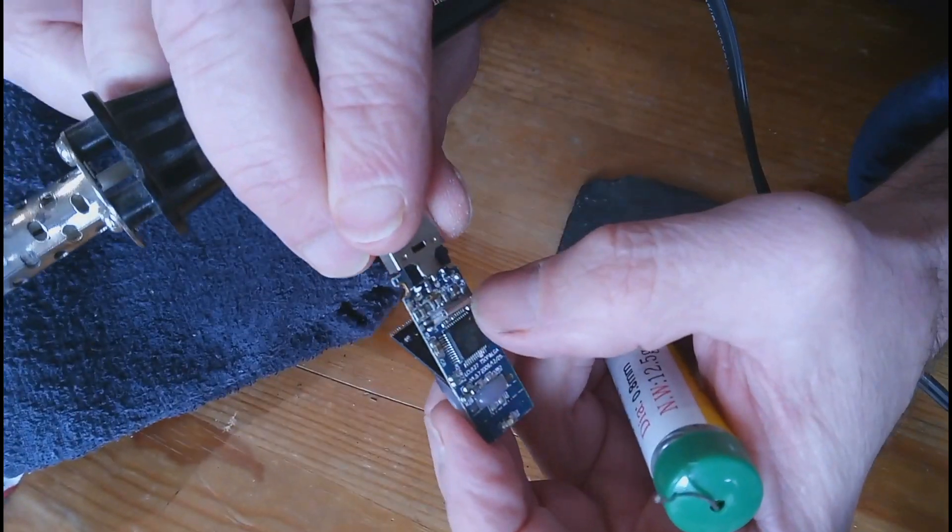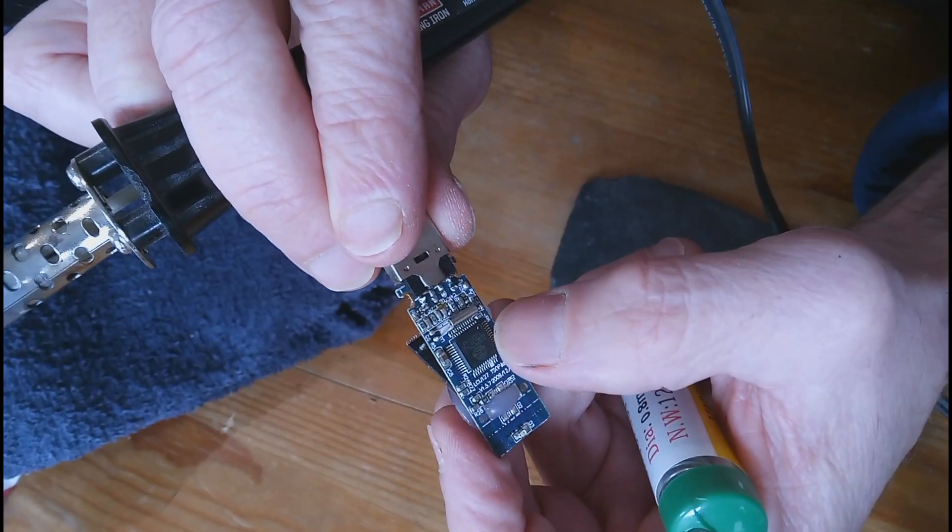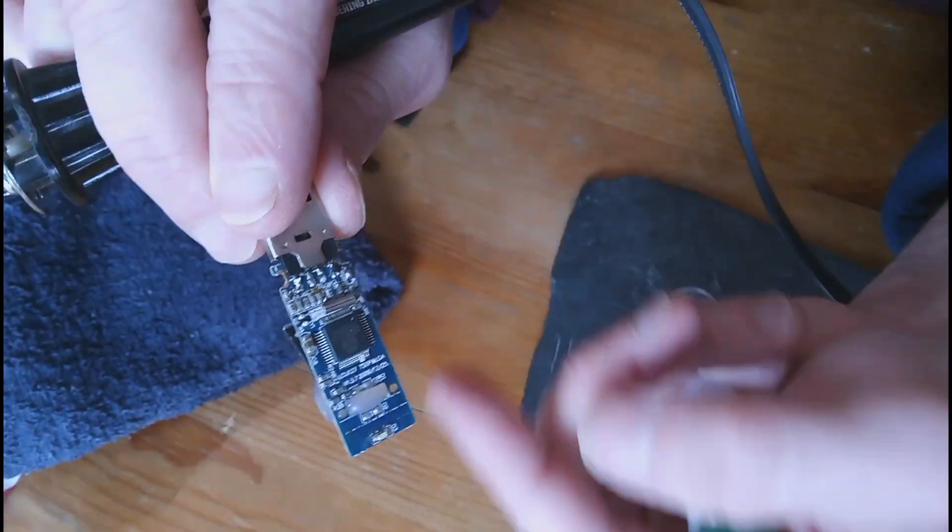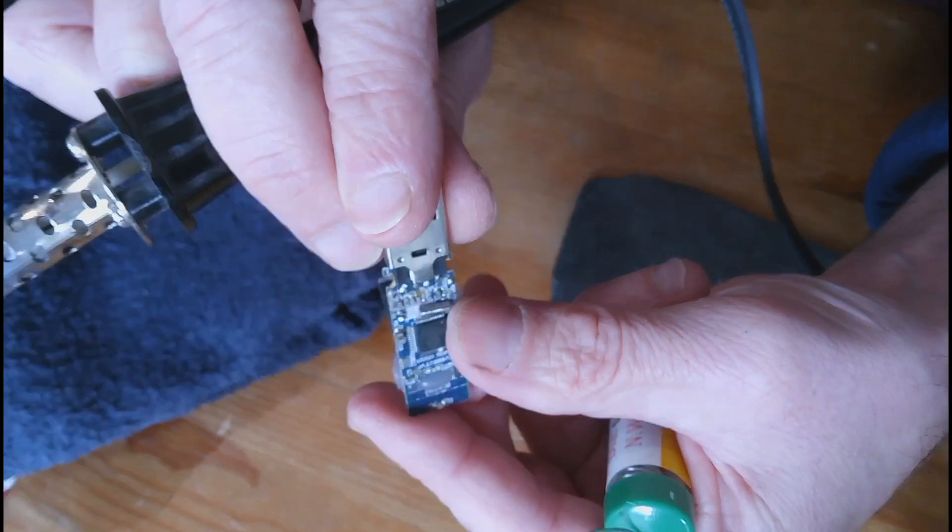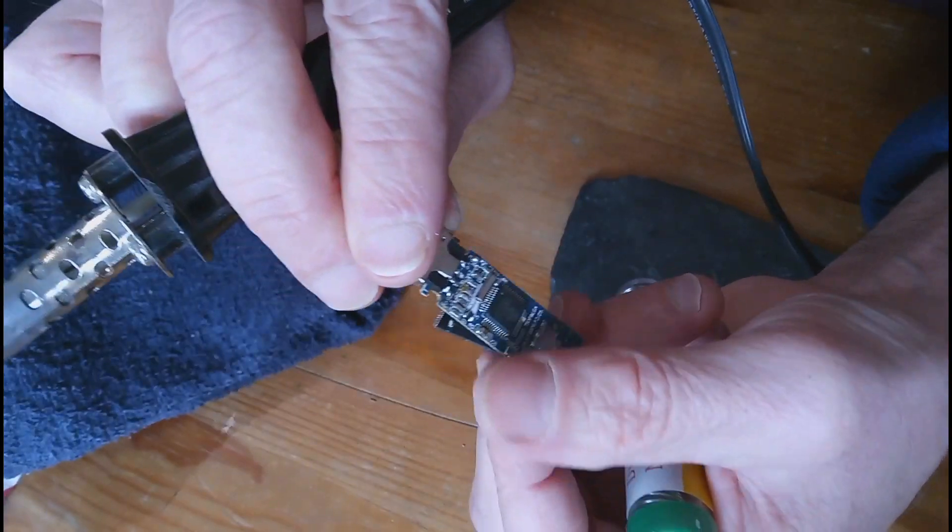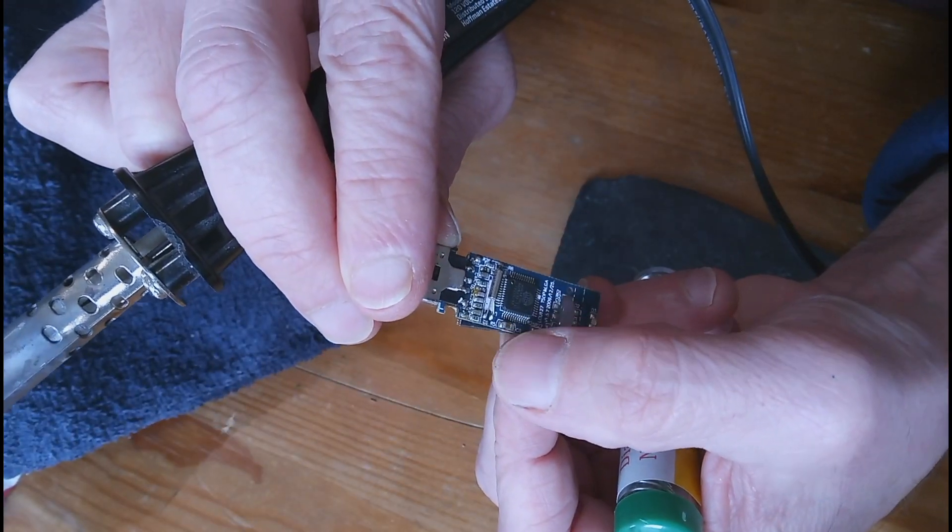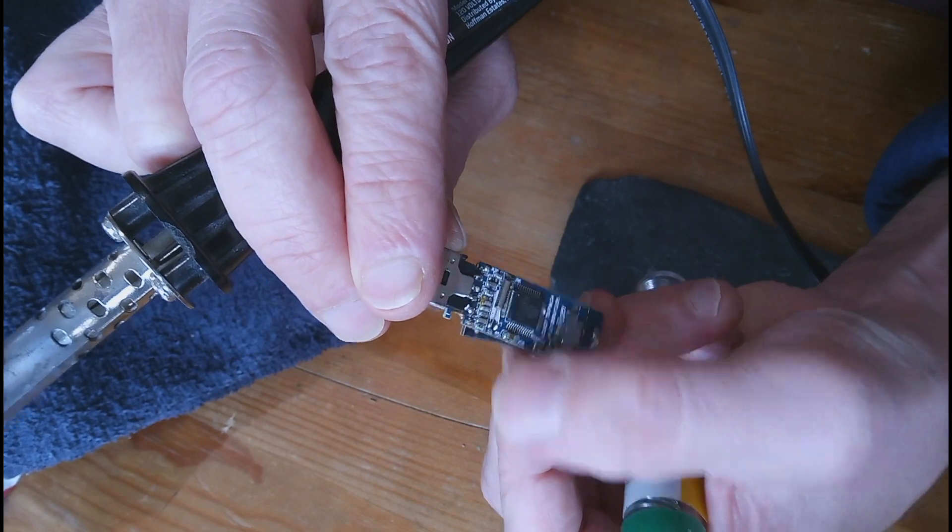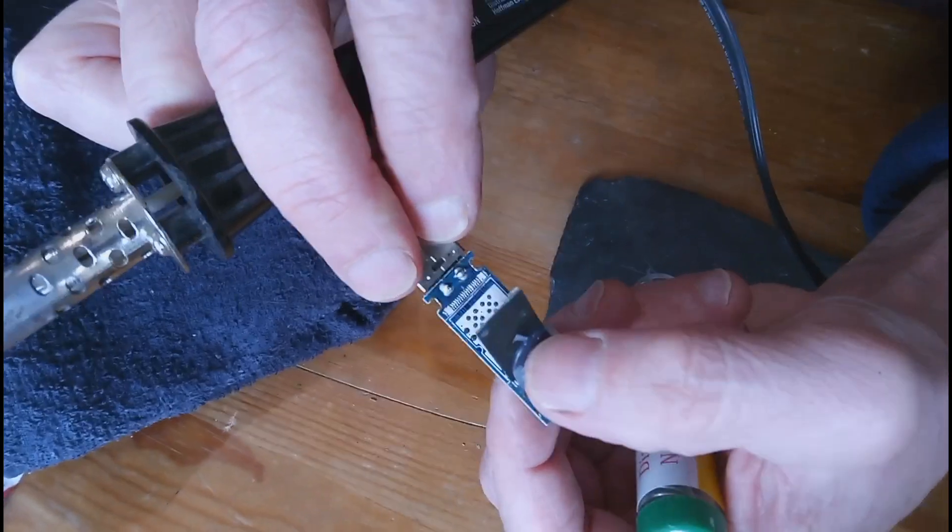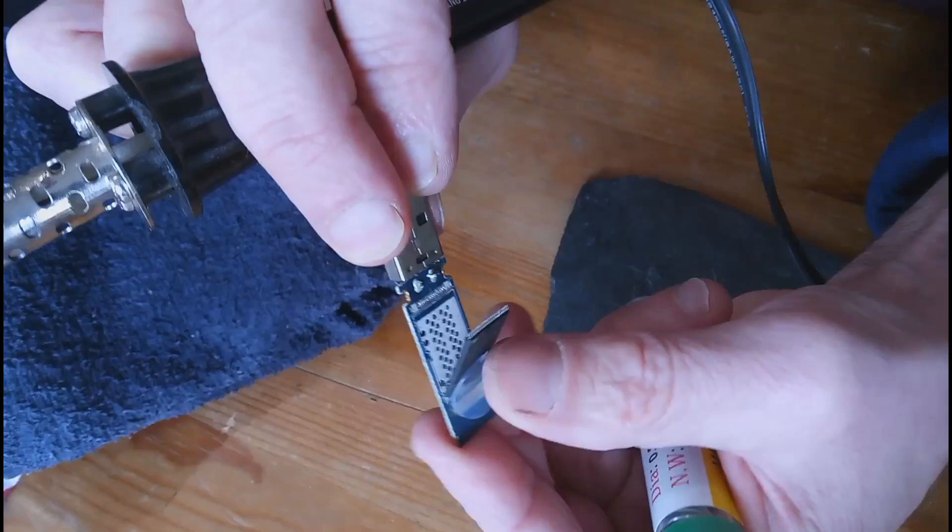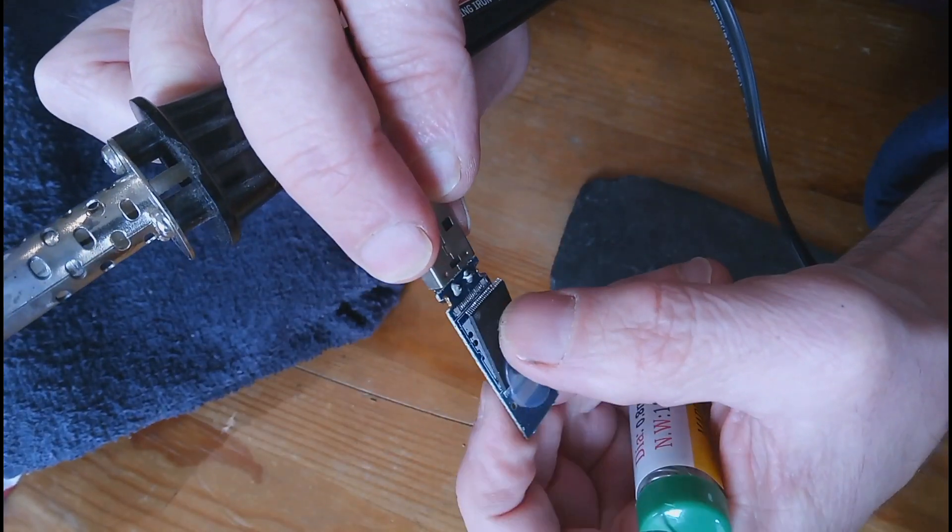There's the crystal, the oscillating crystal that times the USB, times the circuit, and a series of resistors and capacitors. That's about it, that's really about all that's in this thing. So there's your memory chip right there.